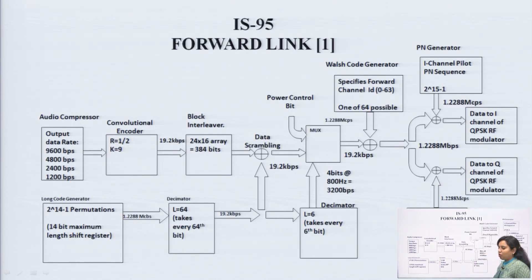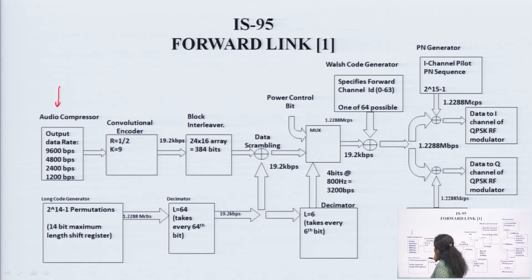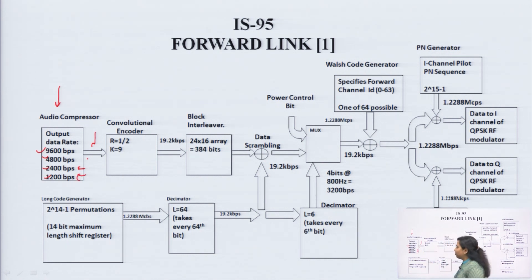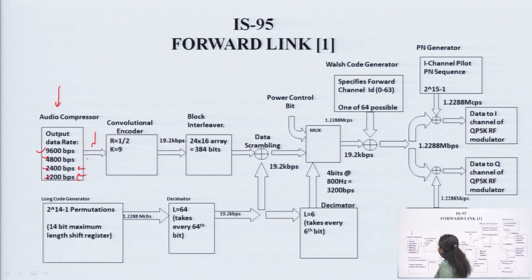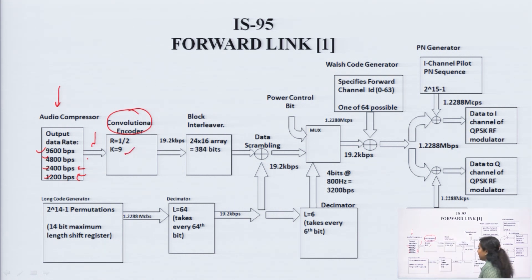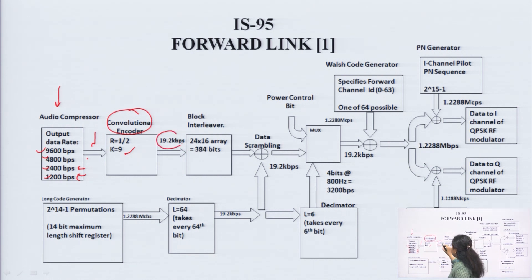This is the block diagram of the forward channel in IS-95. The first block is the audio compressor, which can output one of four data rates: 9600, 4800, 2400, or 1200 bits per second. The output is provided to a convolution encoder with rate 1/2 and constraint length 9, producing a fixed output rate of 19.2 kbps.